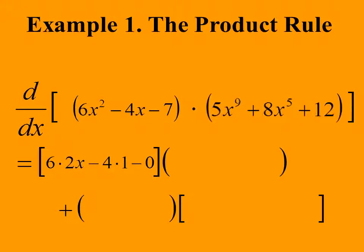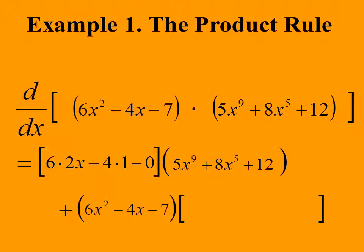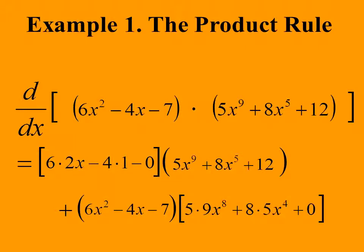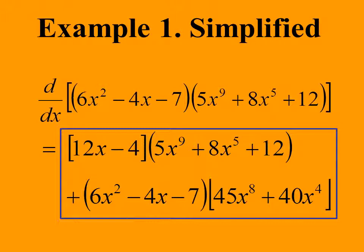Next, we write the second function. After the addition sign, we write the first function. Finally, we have the derivative of the second, which is 5·9x⁸ + 8·5x⁴ + 0. We now simplify the algebra a little, but still keep the pattern of the square brackets. For emphasis, we put a box around this version of the answer.